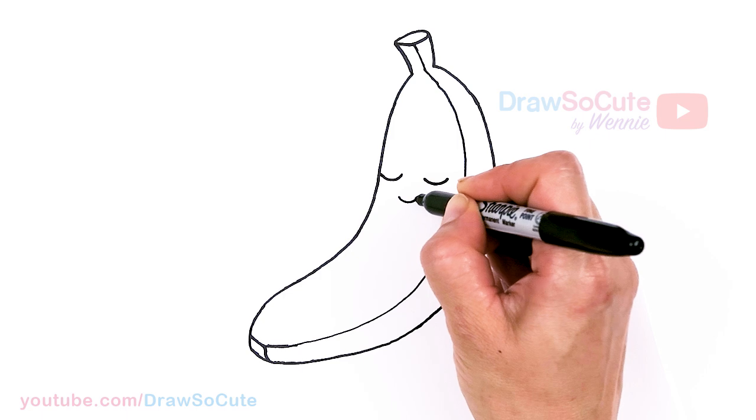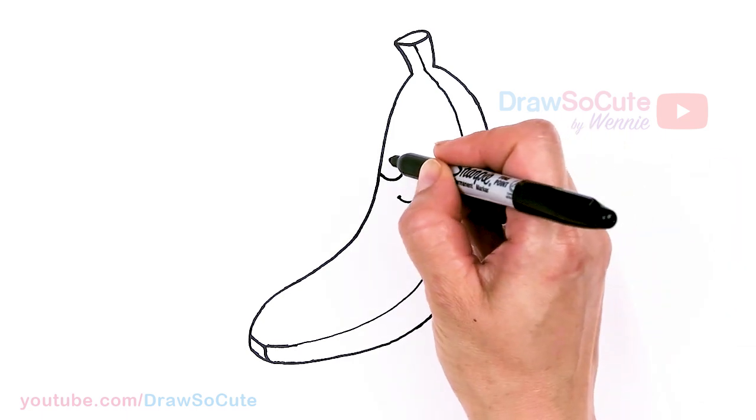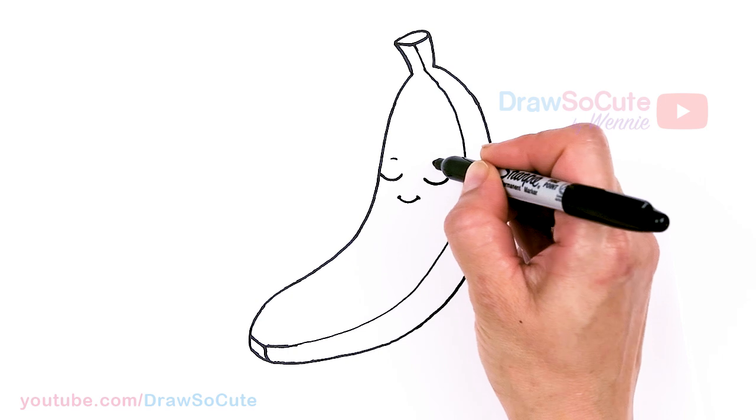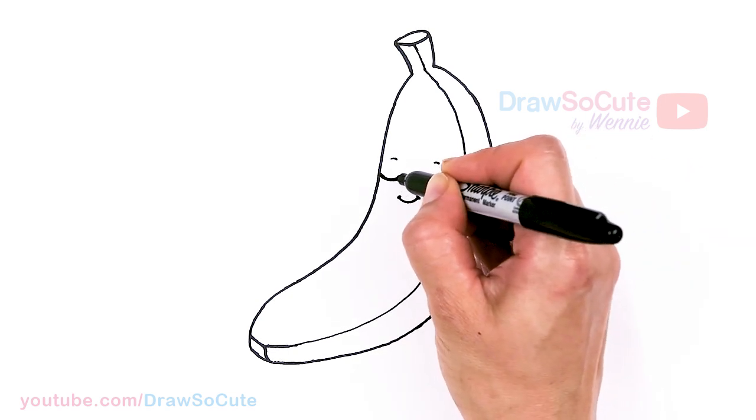And cap it off. There. Now come above each eye and just softly draw a little curve. Thicken this up a little bit more.